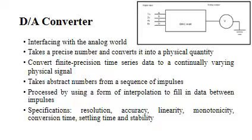A DA Converter converts digital signals into analog format. An analog to digital converter performs the reverse function. A DA Converter takes a precise number and converts it into a physical quantity such as voltage or pressure. These converters are often used to convert finite precision time series data to a continuously varying physical signal.